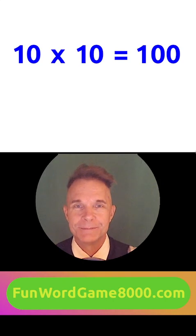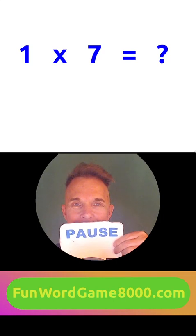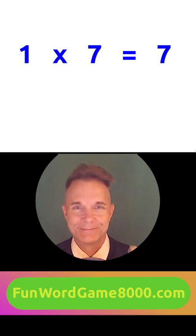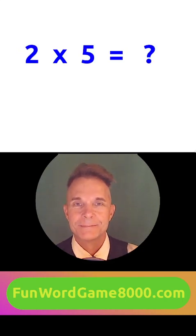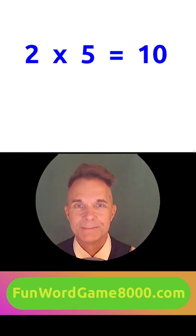Number one. One times seven equals seven. Two times five equals ten.